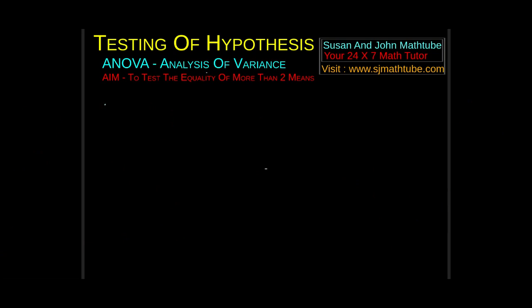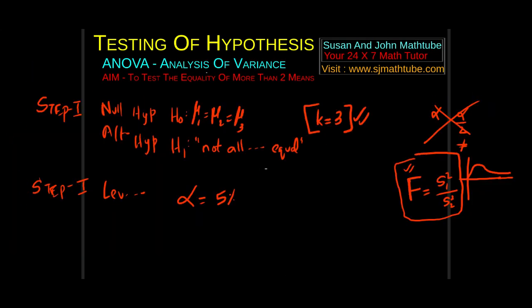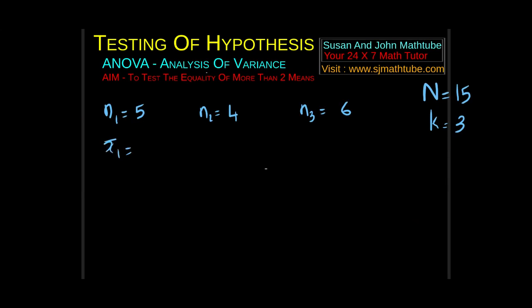After this, you write everything neatly. n1 equal to 5, n2 is equal to 4, n3 is equal to 6, and capital N equal to 15, k is equal to 3. You can write x1 bar is equal to 42, x2 bar is equal to 55, x3 bar is equal to 60. To find the variance, we need the sum of squares. We find two different types of sum of squares: one is called treatment, and the other is called error. You don't learn the logic behind it, but just write sum of squares of treatment.